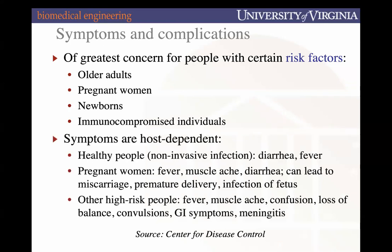The symptoms are typically host-dependent. For healthy people it often presents with diarrhea and fever, which is pretty benign relative to how it affects immunocompromised individuals. For pregnant women, they experience fever, muscle aches, diarrhea, and it can lead to miscarriage, premature delivery, or in worst cases, infection of the fetus. At higher risk individuals it can also cause loss of balance, convulsions, GI symptoms, and meningitis in the more fatal instances.